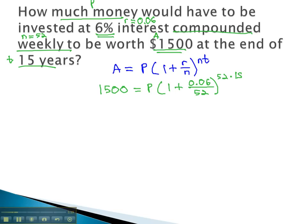Again, being careful how you plug this in the calculator, I'm going to evaluate the exponent and the parentheses separately first. 1500 equals P times, using several decimals for accuracy, 1.00115385 to the 780th power.